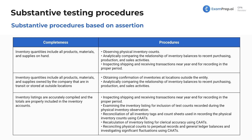Let's talk about completeness. When concerned about completeness, we can be concerned about inventory quantities including all products, materials, and supplies on hand. We could observe physical inventory counts. We could analytically compare the relationship of inventory balances to recent purchasing, production, and sales activity — because your cost of goods sold should be in relation to your decreases in inventory, and increases in inventory should relate to your inventory purchases. Those should correlate, and you could perform analytical procedures to make sure account balances are similar over a certain period.